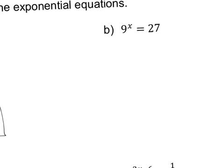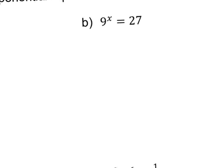This one has a 9 and a 27. I have to think about changing the bases. I know 9 times 3 is 27, but there's no way to make 27 a base of 9 — 9 to the first power is 9, 9 to the second power is 81, it's too big. But both of these are divisible by 3, so I think 3 is the base here.